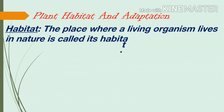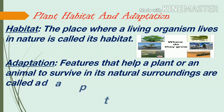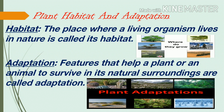Plant habitat and adaptation. Let us first learn the meaning of habitat and adaptation. What is habitat? The place where a living organism lives in nature is called its habitat. In ecology, a habitat is the type of natural environment in which a particular species of organism lives. A species' habitat is the place where it can find food, shelter, protection, and means for reproduction. So, habitat is the place where an organism or a community of organisms lives, including all living and non-living factors or conditions of the surrounding environment.